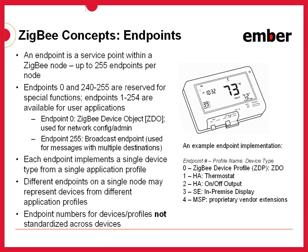Each endpoint implements a single device type from a single application profile. As an example, endpoint 0 occupies the built-in ZDO Zigbee device object from the Zigbee device profile. Endpoint 1 might be a thermostat from the home automation profile. Endpoint 2 might be an on-off output from the home automation profile. Endpoint 3 might be an in-premise display from the smart energy profile. And endpoint 4 might be a manufacturing-specific profile implementation for vendor-specific extensions. By addressing a different endpoint on a single node, we can access different areas of functionality.